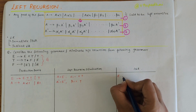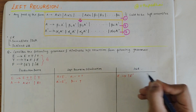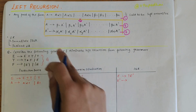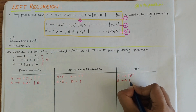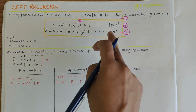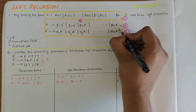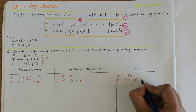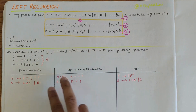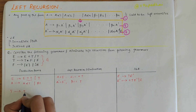From these obtained values we write equation 2 and equation 3. Equation 2: E derives beta-1 A-bar, which is T E-dash. Equation 3: E-dash derives alpha-1 A-dash, which is plus-T E-dash, and also epsilon. So this gives us our left-recursion-free production for E.